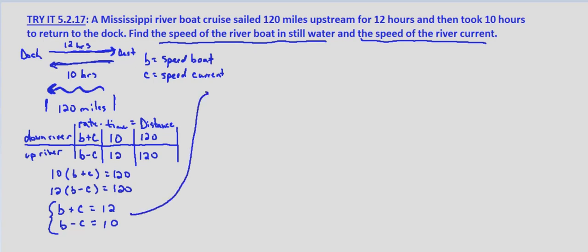I'm going to go ahead and rewrite this up here, but without the bracket on the left-hand side. B plus C equals 12, and B minus C equals 10. Now when we check, I'll go ahead and use these first two equations we found, rate times time equals distance. But to solve, I'm going to use this system.